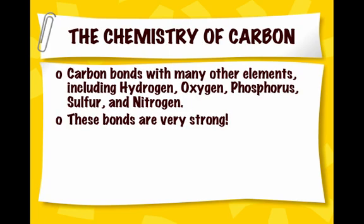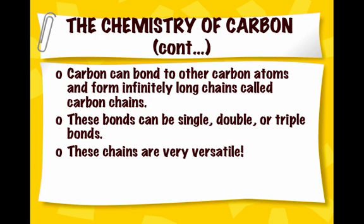Whenever you have carbon, carbon can bond to lots of other elements in addition to bonding with itself, including things like hydrogen, oxygen, phosphorus, sulfur, and nitrogen. These bonds are all very strong, and that's what they maintain and have in common. Once the bonds are formed, they don't break very easily. As carbon bonds, they form these long chains, and we call them carbon chains.